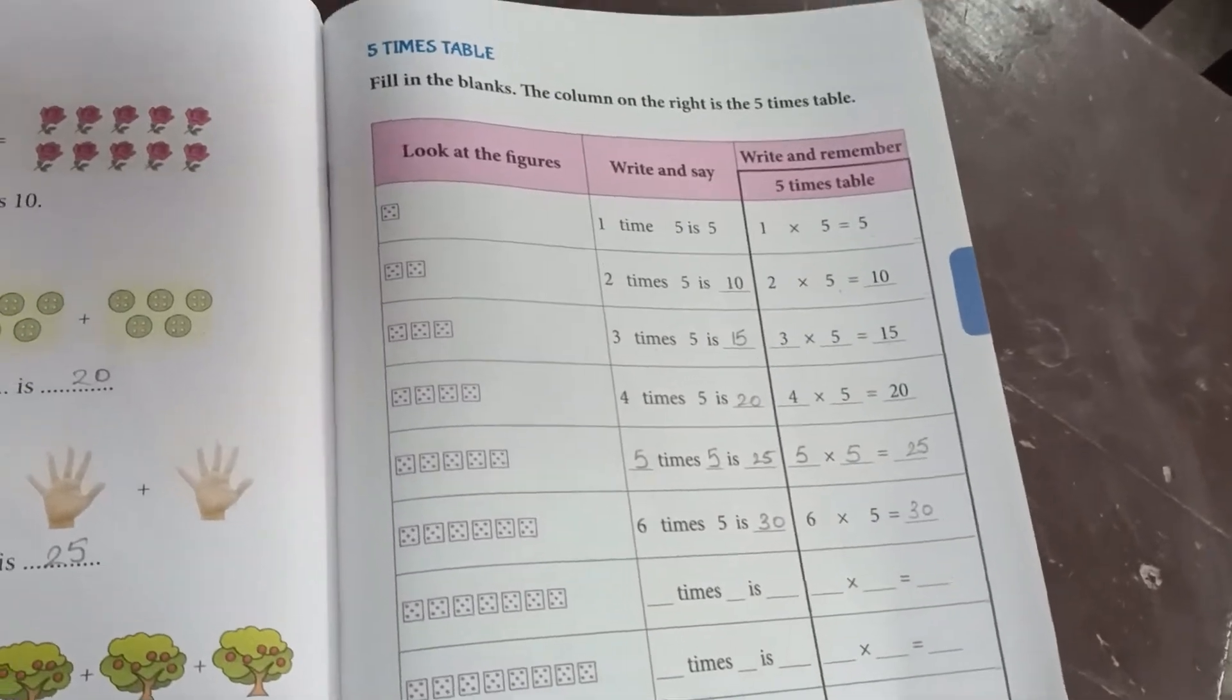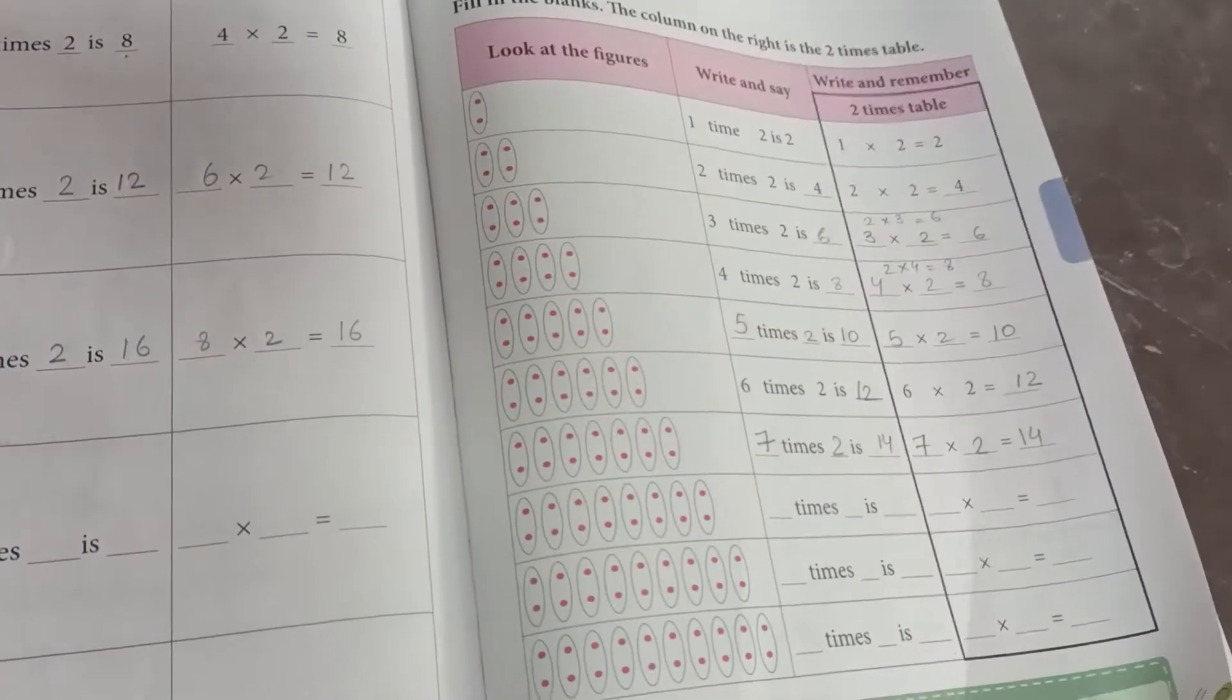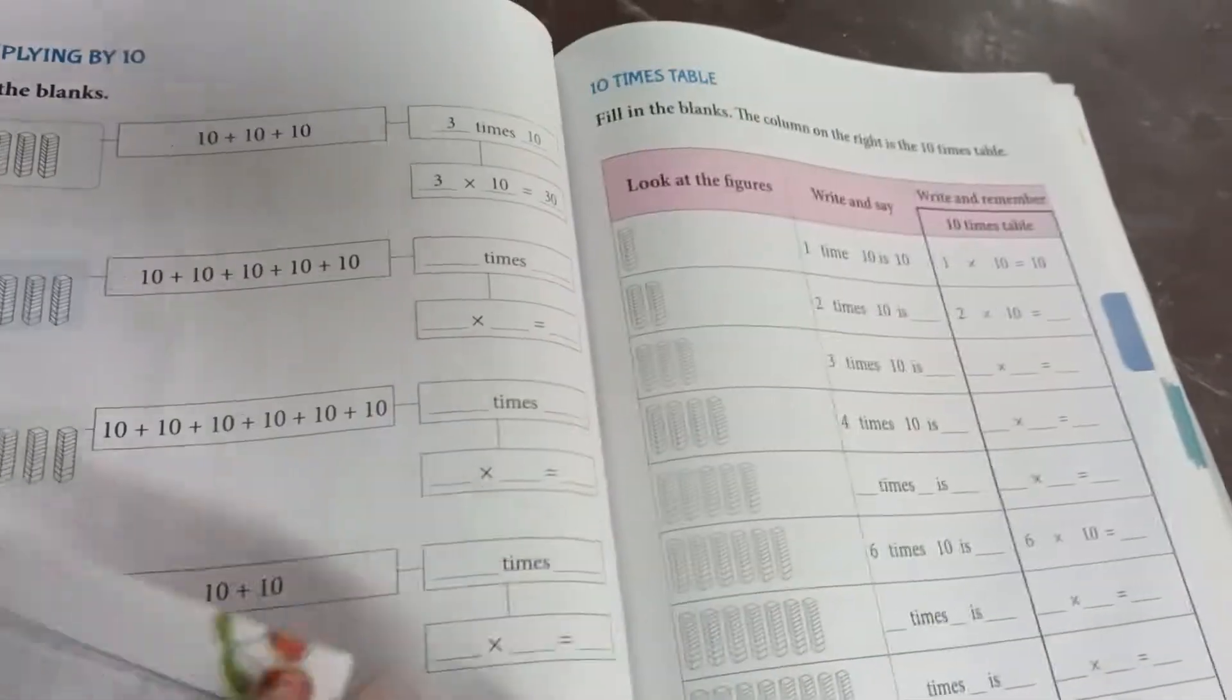Now moving to our concept. Last video, last concept, we had done a multiplication of 5. First of all, we had done a multiplication of 3 and a multiplication of 2. We had finished. I hope you don't have any confusion in it. Now moving to the further concept.